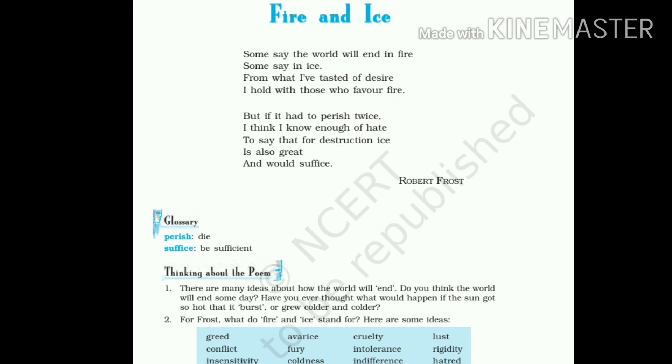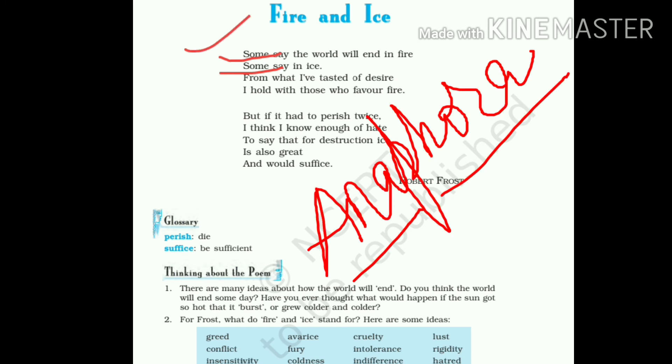Now, let us talk about anaphora. Anaphora is the use of same words in the beginning of two or more than two lines. By using the word 'some' in these both lines, the poet has used the poetic device anaphora.